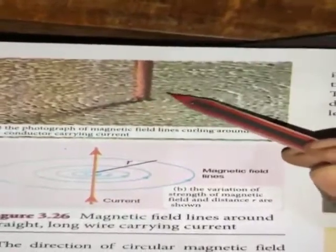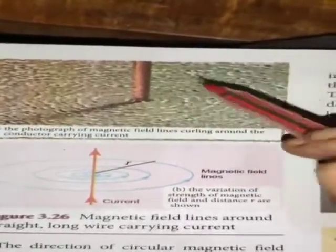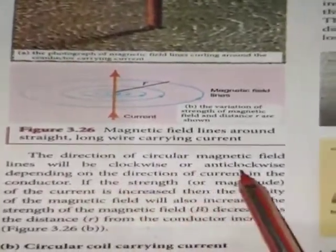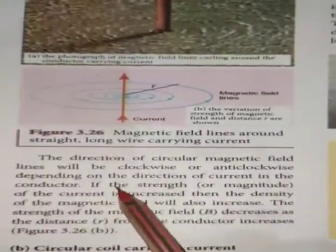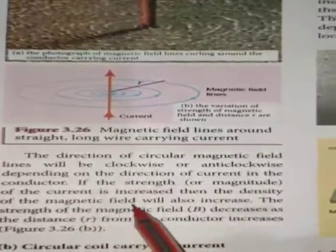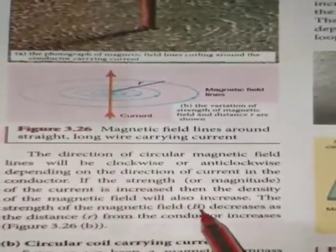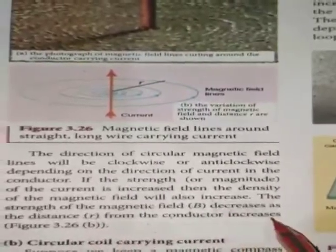When the key is pressed and the cardboard is tapped, the iron filings form concentric circles showing the magnetic field lines. The magnetic field lines will be clockwise or counterclockwise depending on the direction of current in the conductor. If the current strength is increased, the density of the magnetic field will also increase. The strength of magnetic field B decreases as the distance r from the conductor increases.